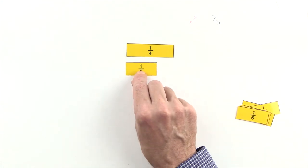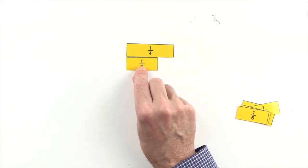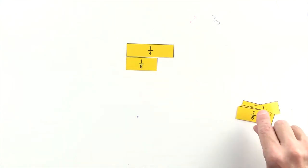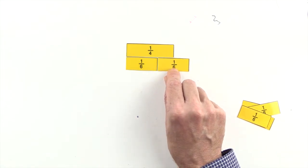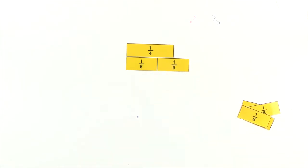One sixth is less than one quarter, and two sixths are greater than one quarter, so we can't use sixths to make an equivalent fraction to one quarter.